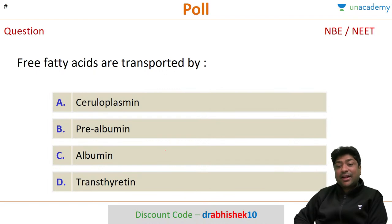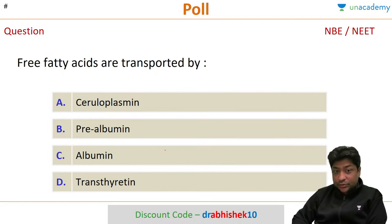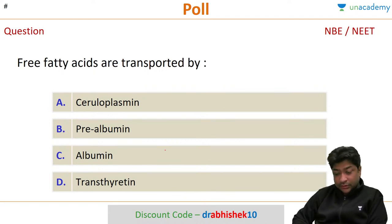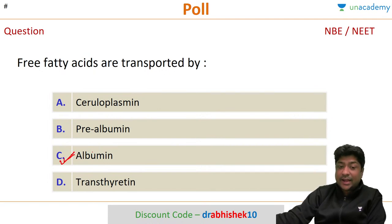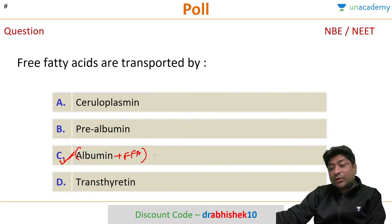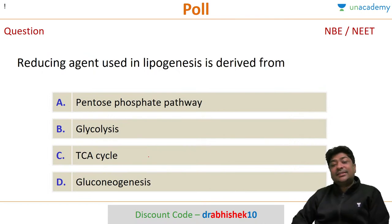Next question: free fatty acids are transported by which molecule? Options are ceruloplasmin, prealbumin, albumin, or transthyretin. The correct answer is albumin. Because free fatty acids are transported by albumin, this complex cannot cross the blood-brain barrier, which is why the brain is not able to use free fatty acids directly.